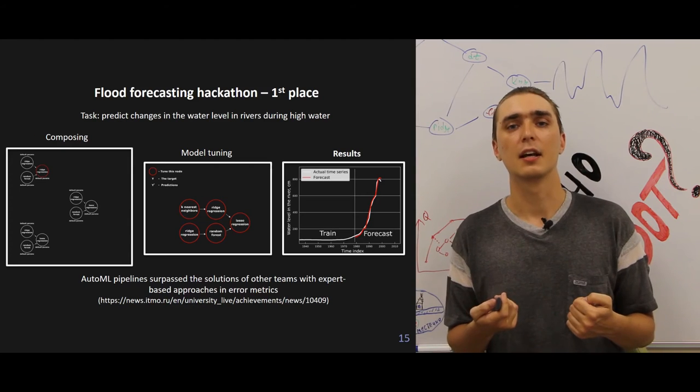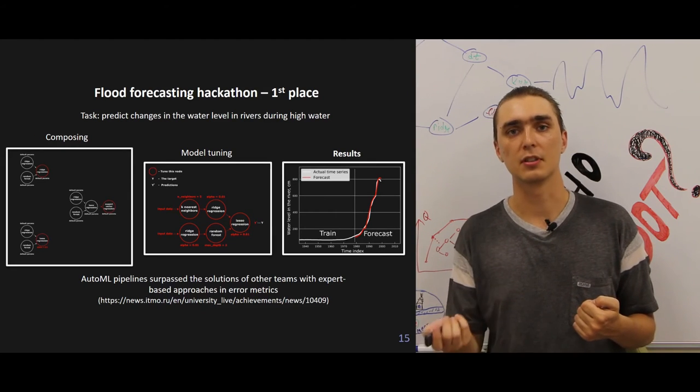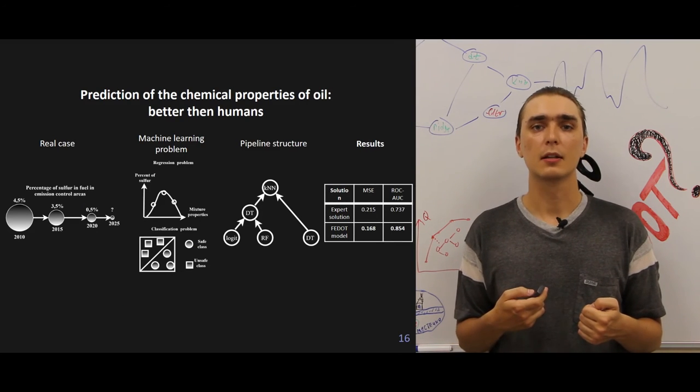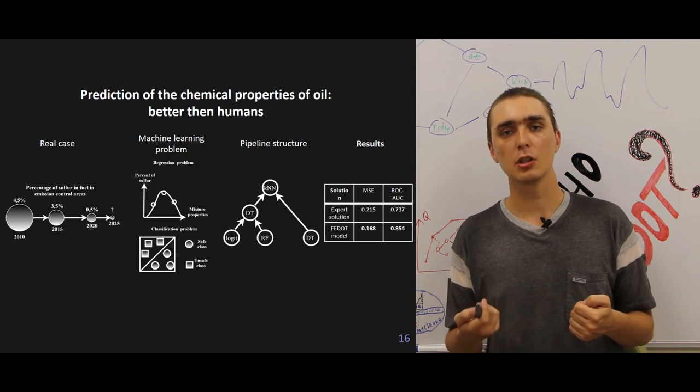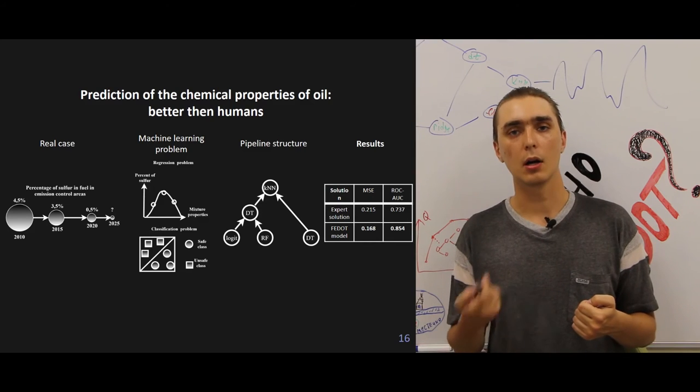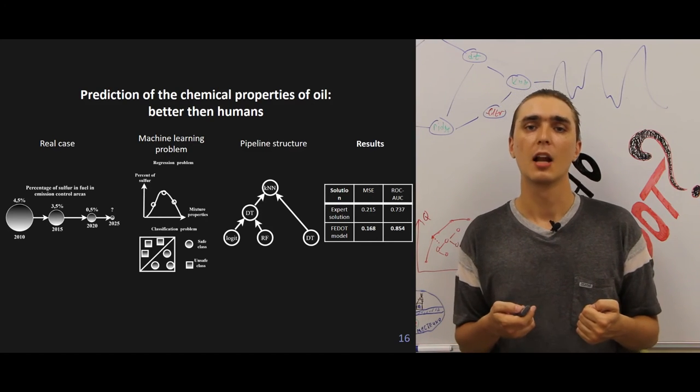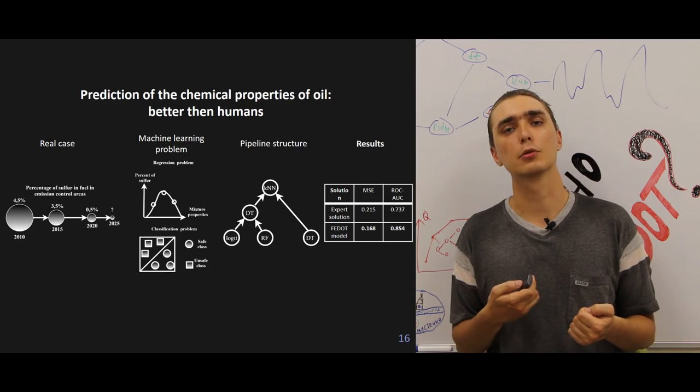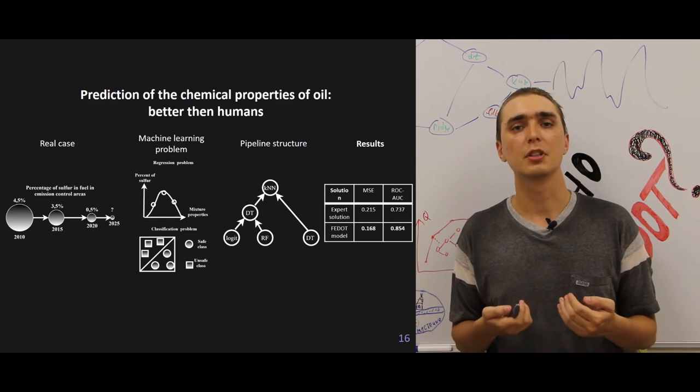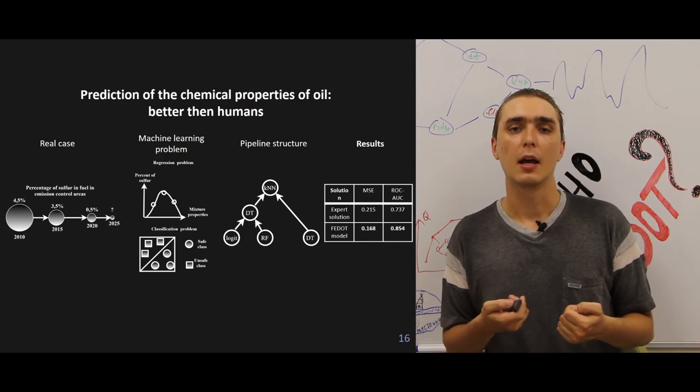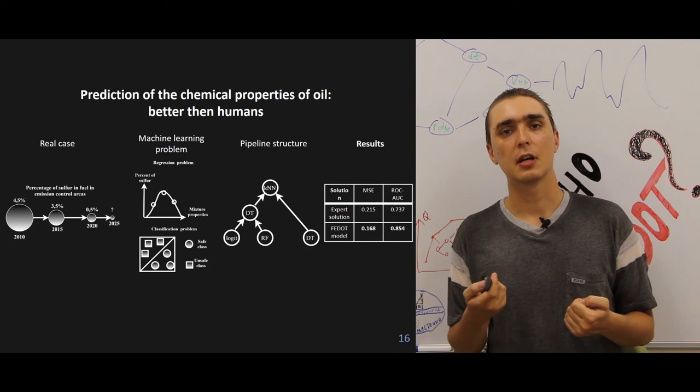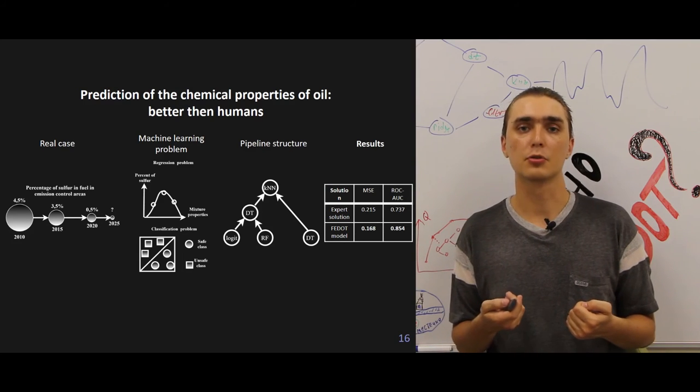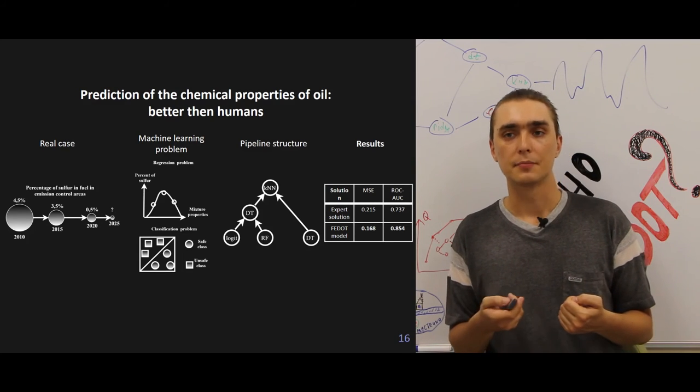The third case is oil chemistry prediction. We predict the quality of the oil according to its properties. It's quite an actual problem, since the existing expert-based solutions do not achieve the appropriate quality. We generated a pipeline that allows us to overcome the existing solutions and produce a human-competitive result.